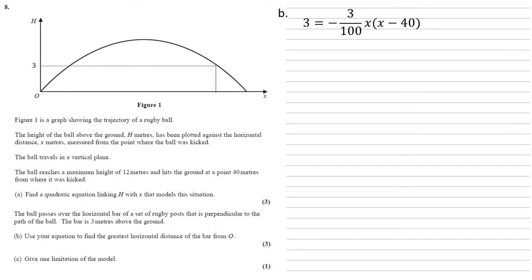So by putting 3, the height of the bar, into our equation, we get that 3 equals minus 3 over 100x, x minus 40, which we now need to solve for x. Multiplying by the minus 100 and cancelling the 3's gives us that negative 100 equals x, x minus 40. Expanding the right hand side gives us x squared minus 40x. And rearranging gives us x squared minus 40x plus 100 equals 0.